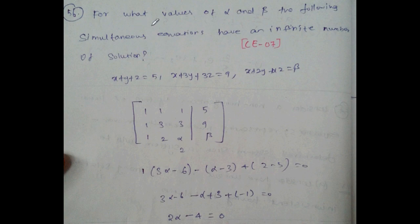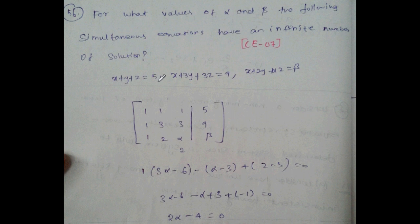For what value of alpha and beta do the following simultaneous equations have an infinite number of solutions? x plus y plus z equal to 5, x plus 3y plus 3z equal to 9, x plus 2y plus alpha z equal to beta.